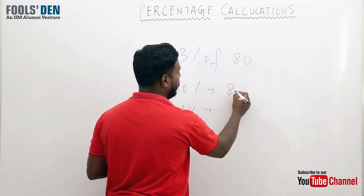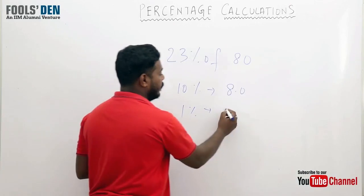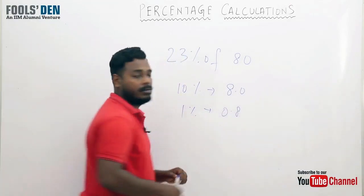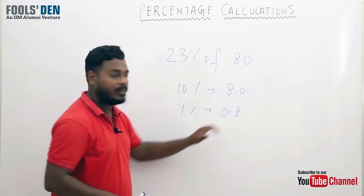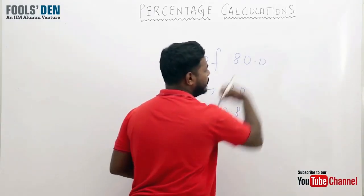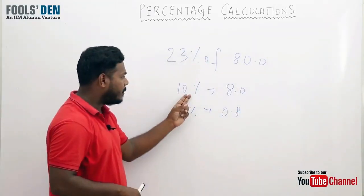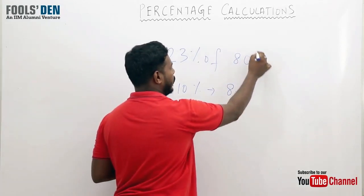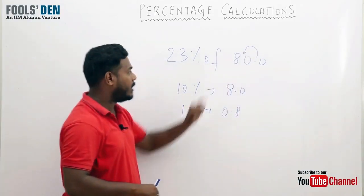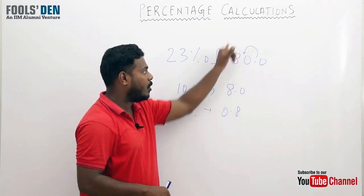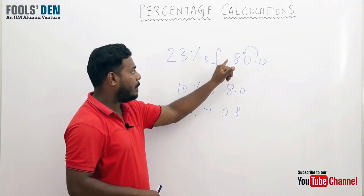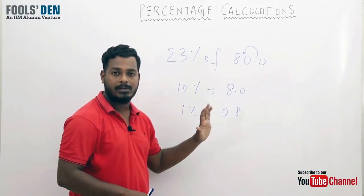For any number, first calculate its 10 percent and 1 percent, which is quite easy. 80's 10 percent would be 8.0 and 1 percent would be 0.8. 80 is nothing but 80.0. For 10 percent, move the decimal one place to the left, making it 8.0. For 1 percent, move it one more place left to get 0.8.